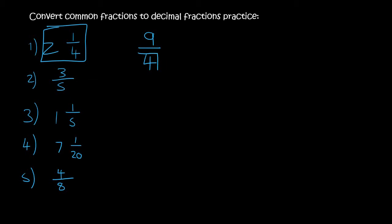Our goal is to change this to a 10, 100, 1000, or a million. The best one or the closest one would be 100. So you could multiply this by 25, but what you do to the bottom you must do to the top. At the bottom we would have 100. At the top, I would just use a calculator, and that will give you 225.